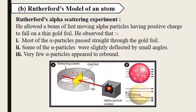After this experiment, what he observed: most of the alpha particles passed straight through the gold foil, some of the alpha particles were slightly deflected by small angles, and very few alpha particles appeared to rebound.